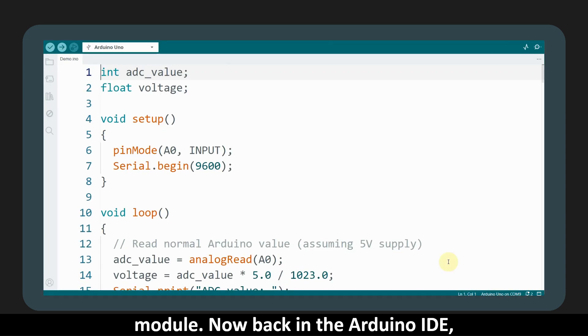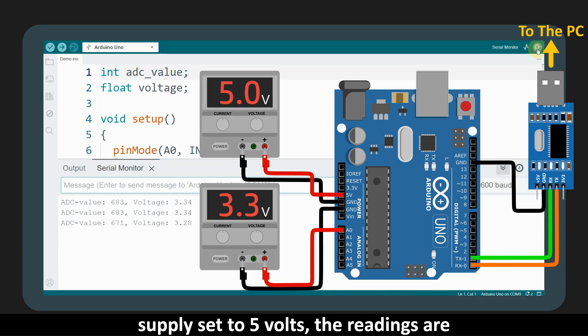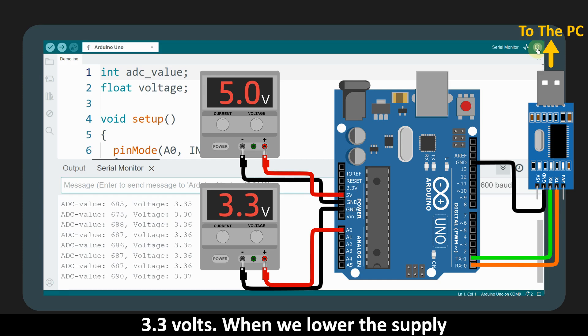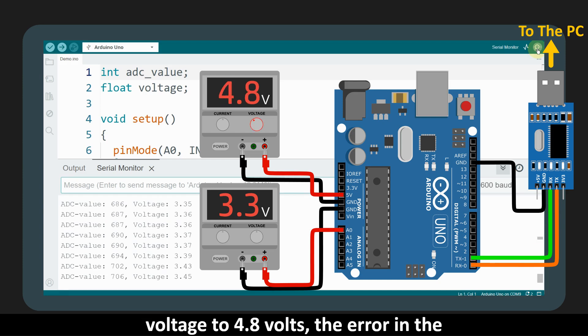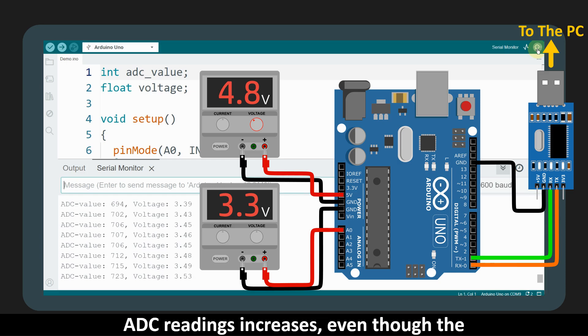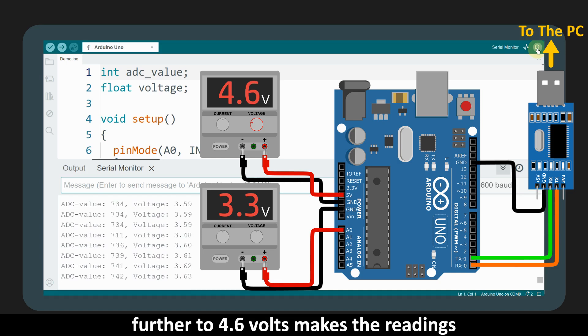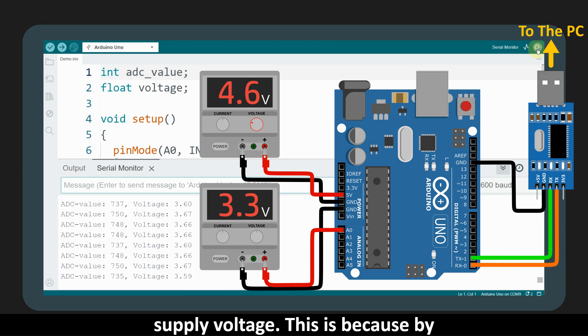Now back in the Arduino IDE, we open the serial monitor. With the supply set to 5 volts, the readings are very close to the actual voltage that is 3.3 volts. When we lower the supply voltage to 4.8 volts, the error in the ADC readings increases, even though the input is still a steady 3.3 volts. Decreasing the supply voltage even further to 4.6 volts makes the readings deviate even more. This shows that the Arduino's ADC values are affected by the supply voltage.